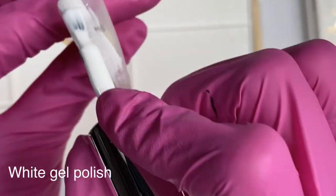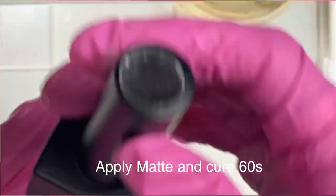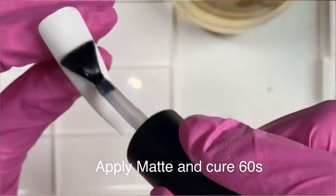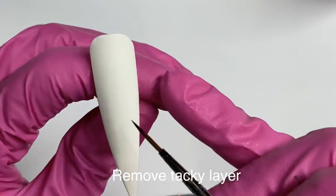As usual, we start with white or light color gel. Then apply matte top coat and cure for 60 seconds and then remove the tacky layer.